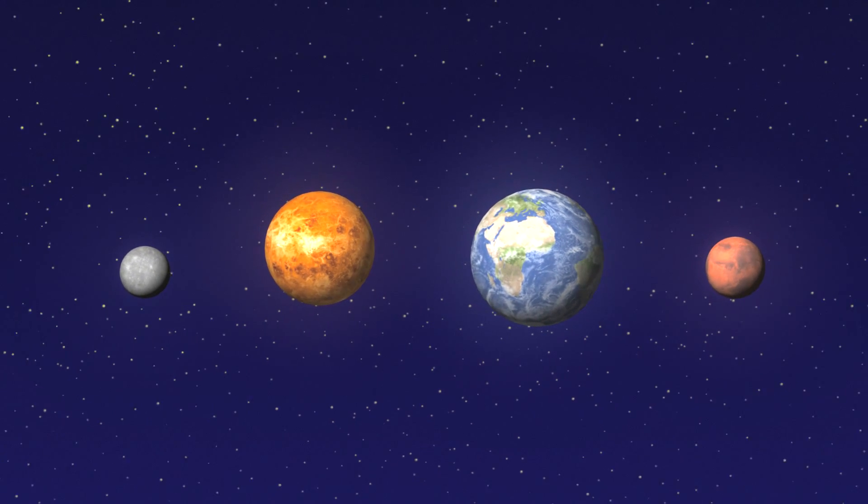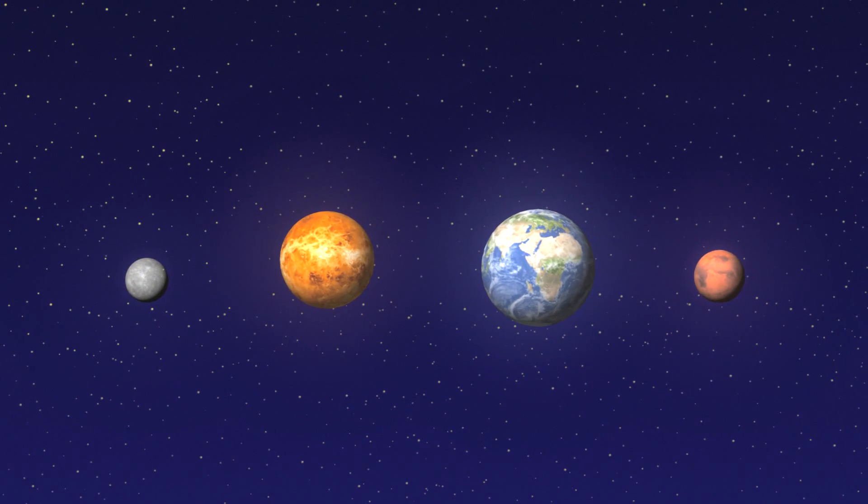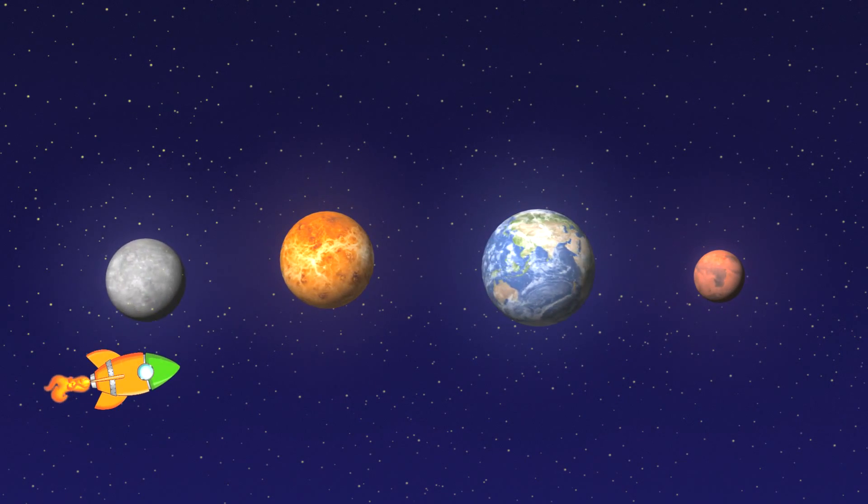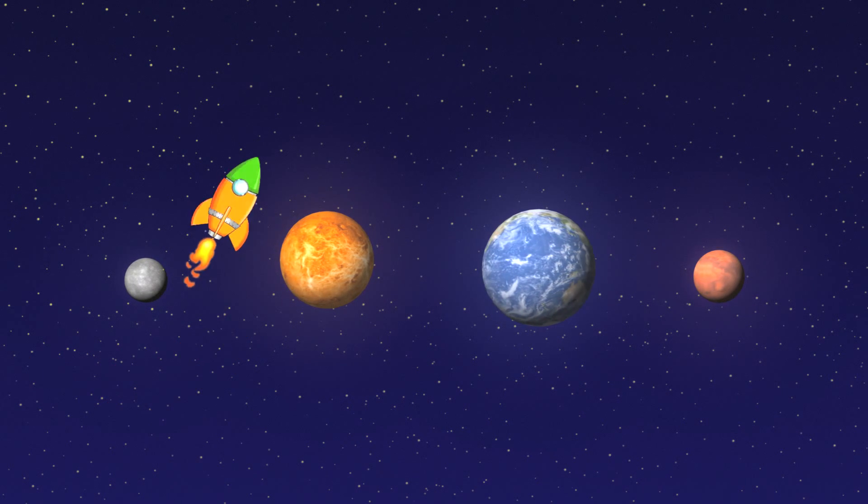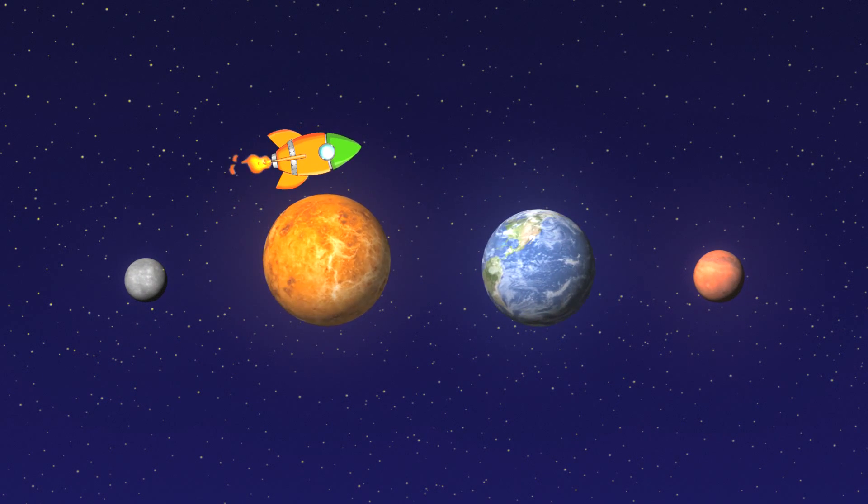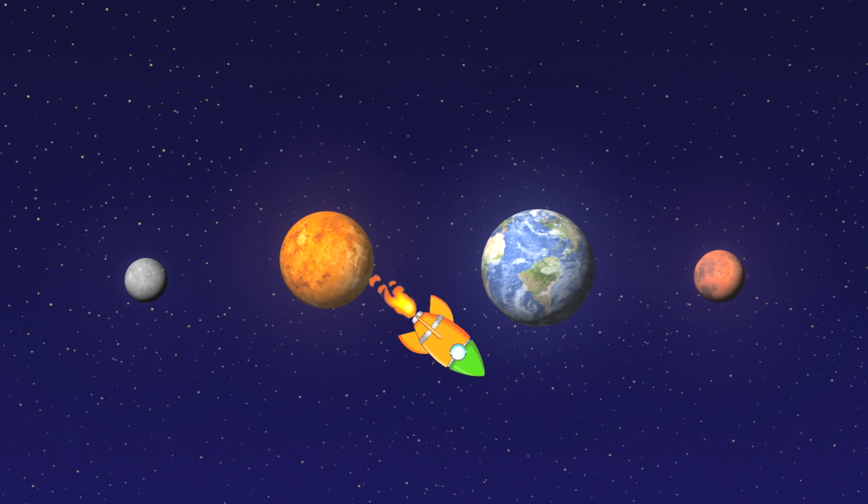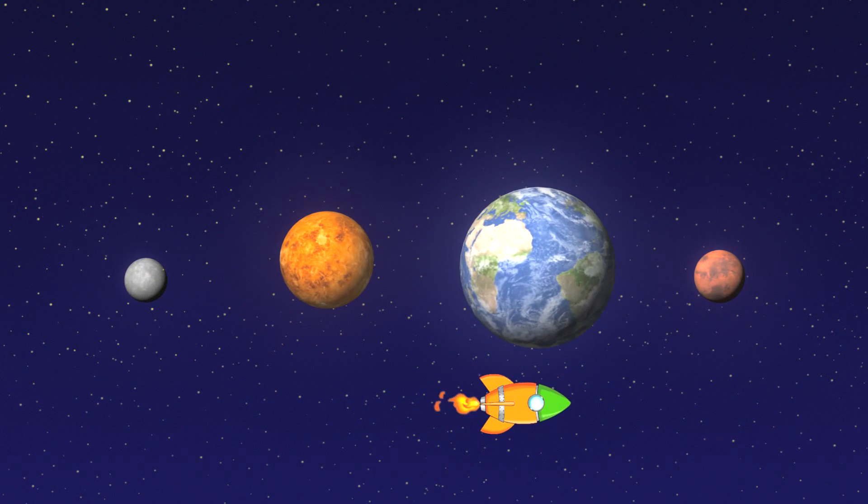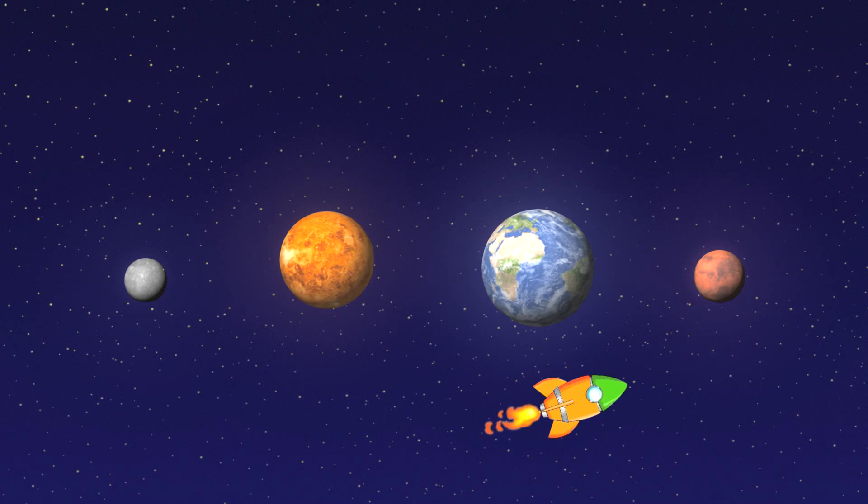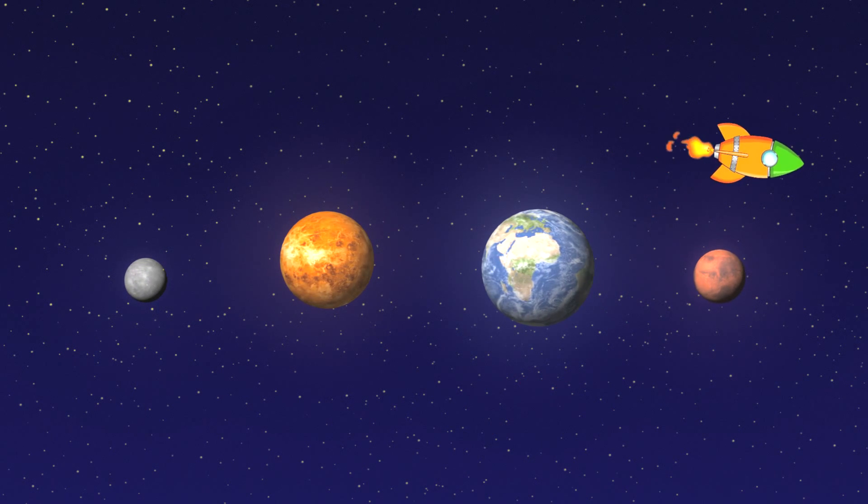The four closest planets to the Sun are Mercury, the smallest planet in the solar system, Venus, our planet Earth, and Mars.